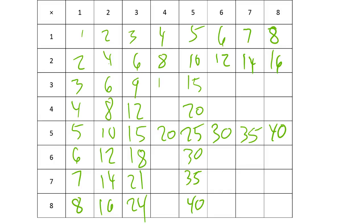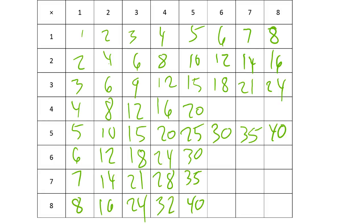For the threes, if you don't know them, the easiest way is to think of adding three more. Twelve — we already know fifteen, so that's eighteen, and then one more makes twenty-one, then twenty-four. Now looking at the fours, it's a little bit trickier, but we've got sixteen, twenty, and then twenty-four comes after twenty, then twenty-eight — that's not too bad — and then two more makes thirty.